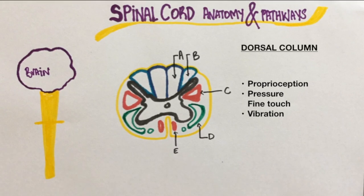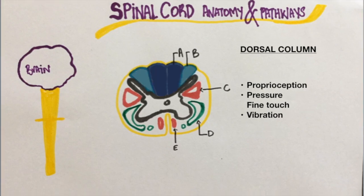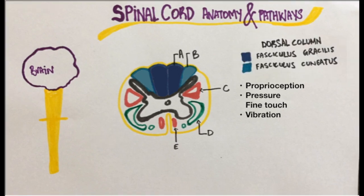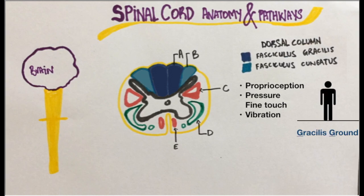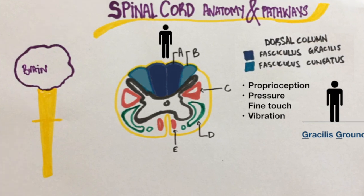The dorsal column is also known as the posterior column. It has two parts: fasciculus gracilis and fasciculus cuneatus. Gracilis is responsible for the lower parts of the body while cuneatus is responsible for the upper parts. I remember this by thinking that gracilis is closer to the ground. If you imagine a person standing, their feet are towards the middle and hands towards the outside — and that's exactly how the dorsal column's distribution is. Gracilis is present medially and cuneatus is lateral.